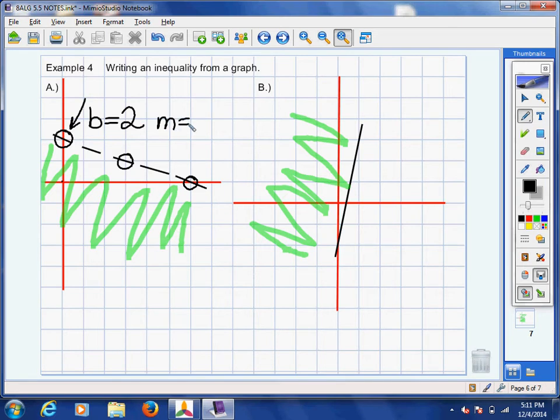Now, the other thing that we need is we need to find the slope to calculate the slope. Pick any two points. You could start here at the two on the y and use rise over run. You can go down one, right three. So I went down one, right three.